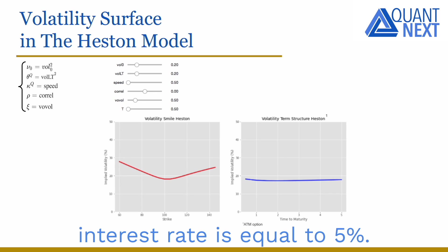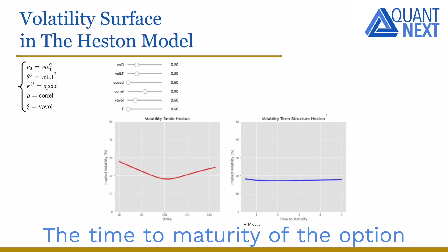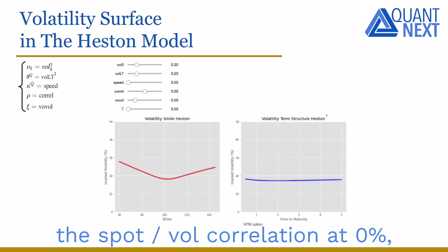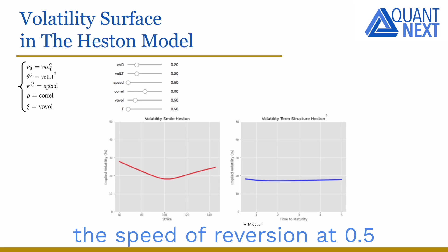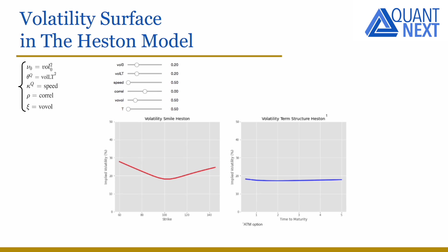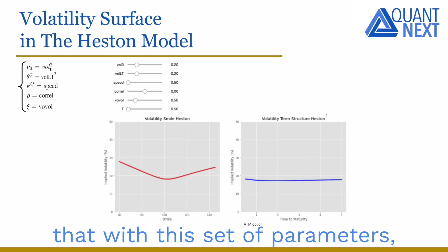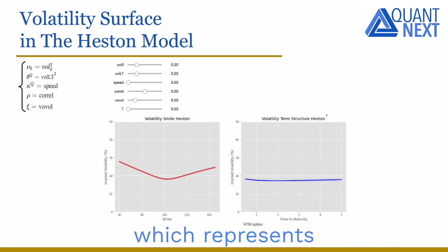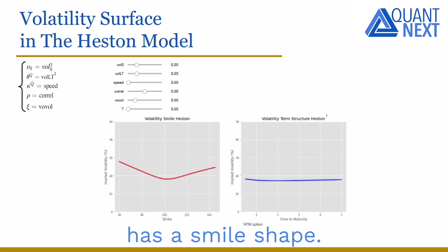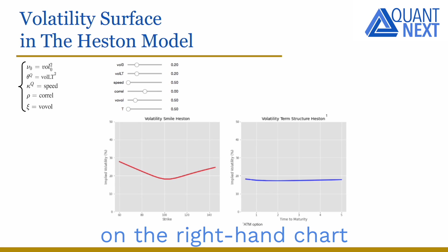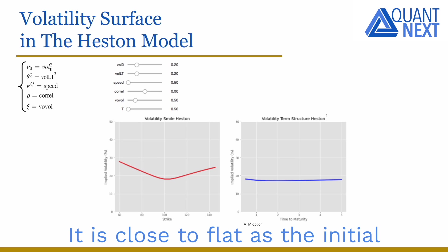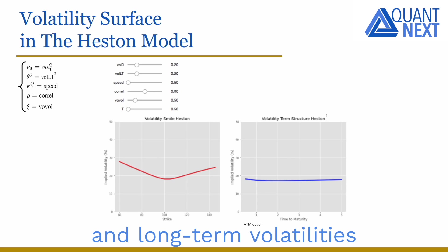We assume that the risk-free interest rate is 5%, the time-to-maturity is set at 0.5, the vol-of-vol at 50%, the spot-vol correlation at 0%, the speed of reversion at 0.5, and the initial and long-term volatility (square root of variance) at 20%. With this set of parameters, the implied volatility curve as a function of the strike price has a smile shape. The term structure of implied volatility for at-the-money options is close to flat, as the initial and long-term volatilities are the same.